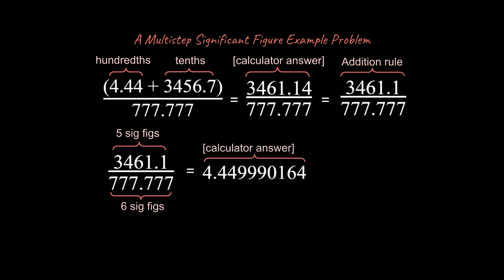This is our calculator answer over here. Our answer should have the least amount, the least precise value. So between five and six, the least precise value would be five. And so we should round it off like this and end up with an answer of 4.4500.